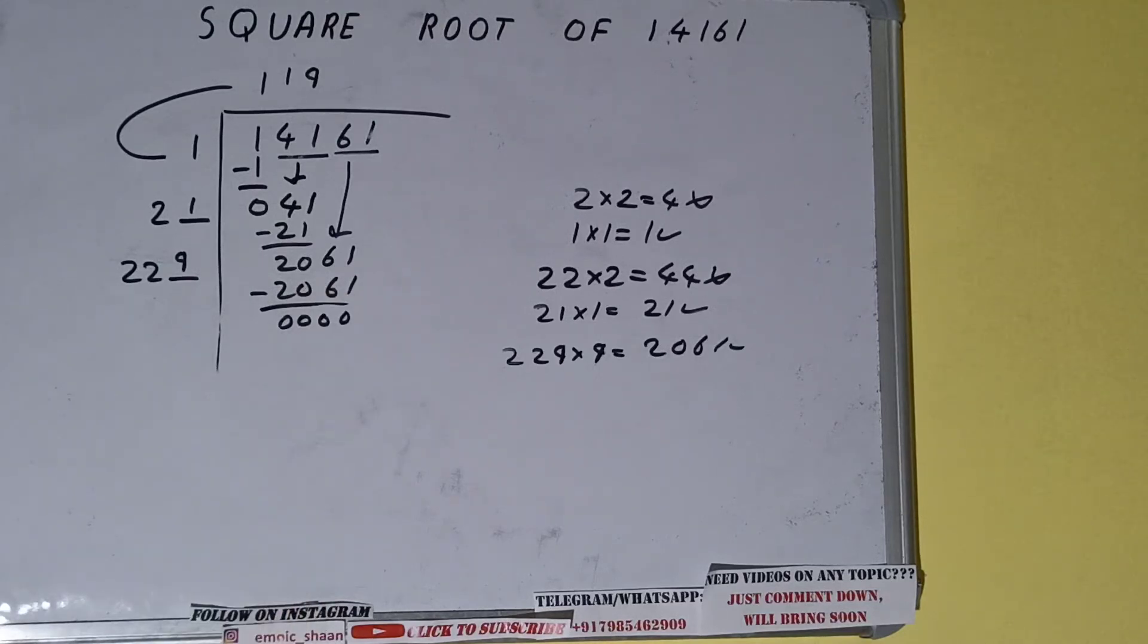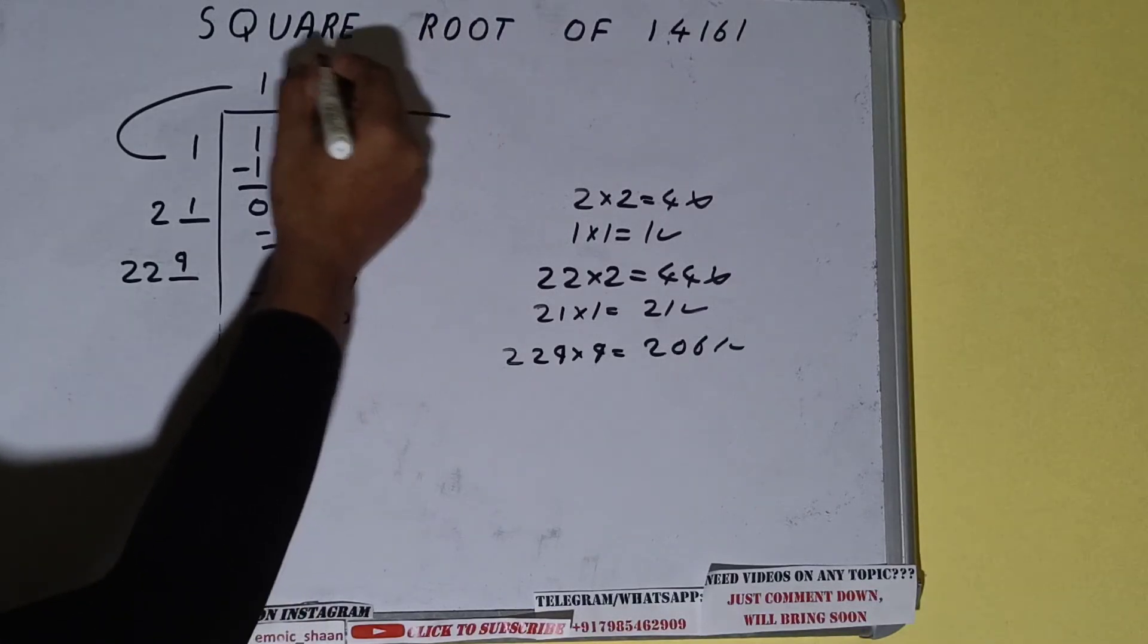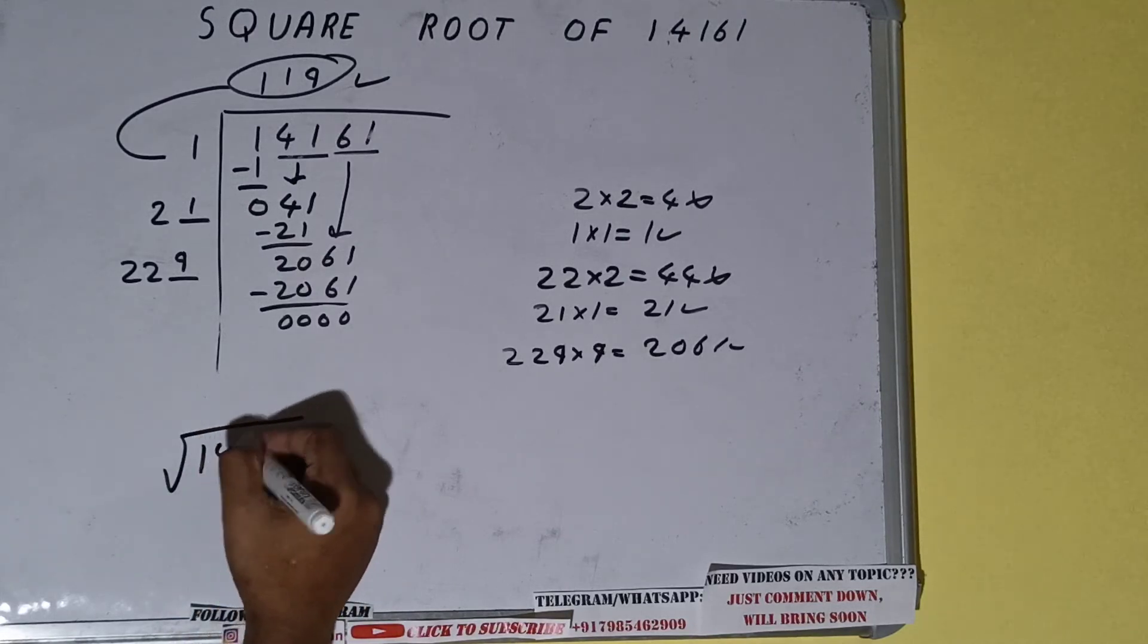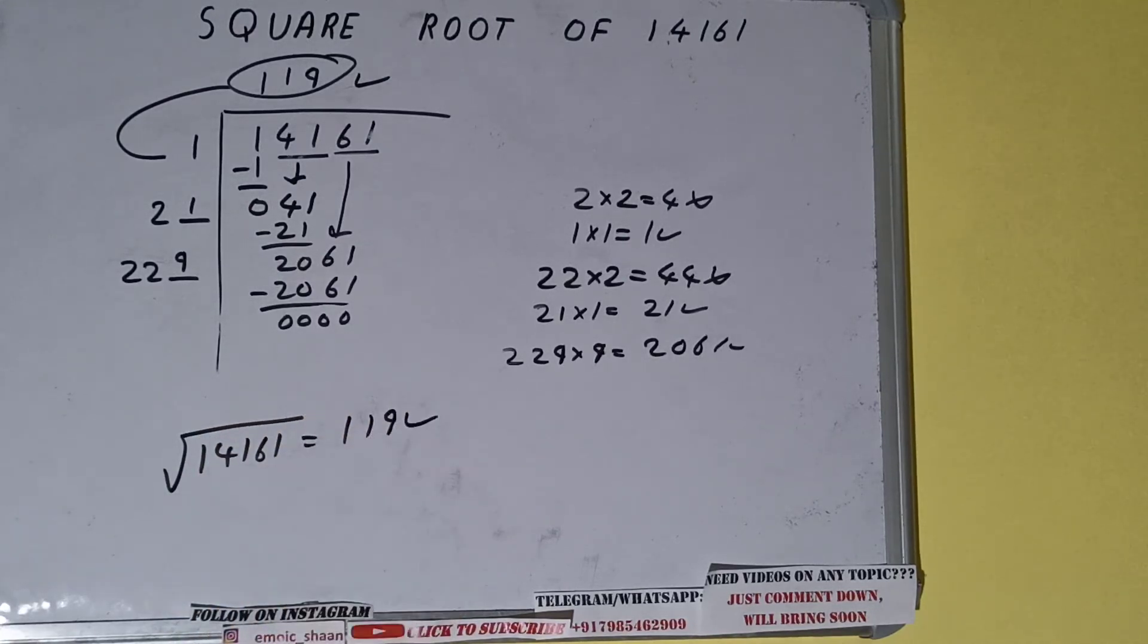So 9 here and 9 here. 2061 subtract it and we'll be getting 0. Once we get 0, whatever is in the equation will be the answer—that is 119. So square root of 14161 will be 119. That's it.